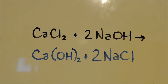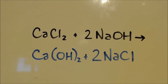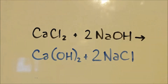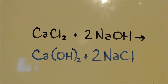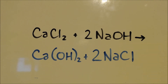This is John Black, super chemist, here to show you how to make some calcium hydroxide. Here's the equation: I'm going to use some calcium chloride and some sodium hydroxide. You can see I need twice as much sodium hydroxide as I do calcium chloride, so I'll have to keep that in mind. It will make calcium hydroxide and some table salt.